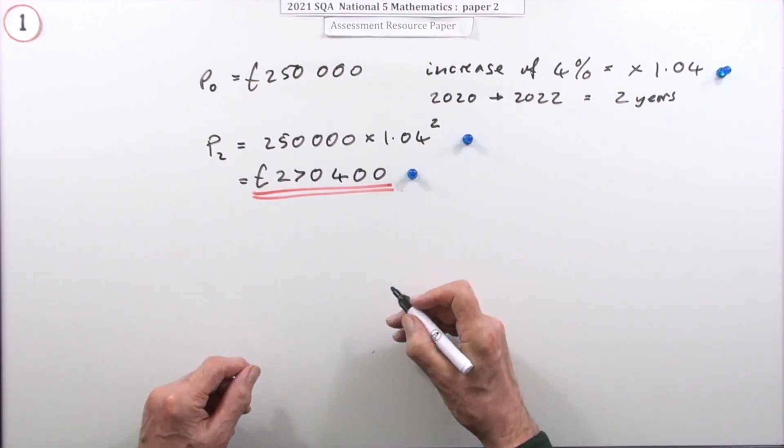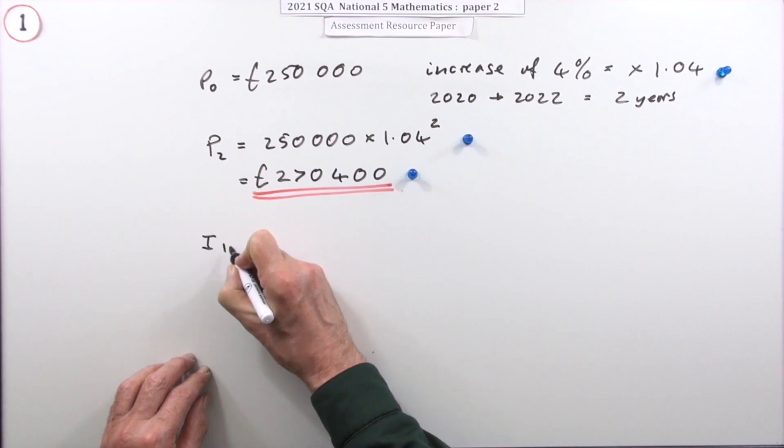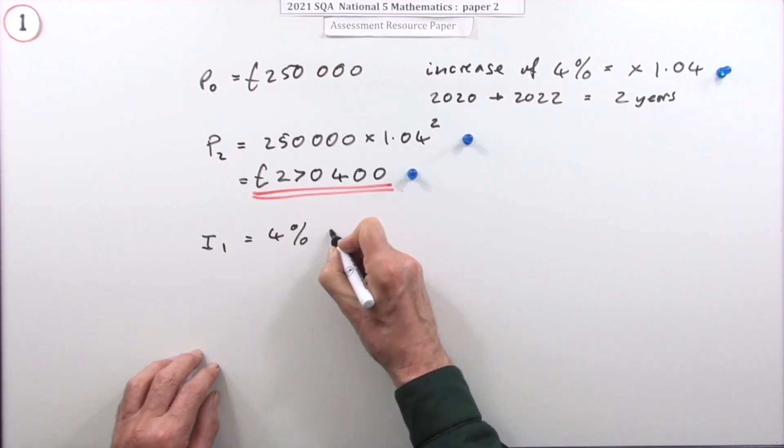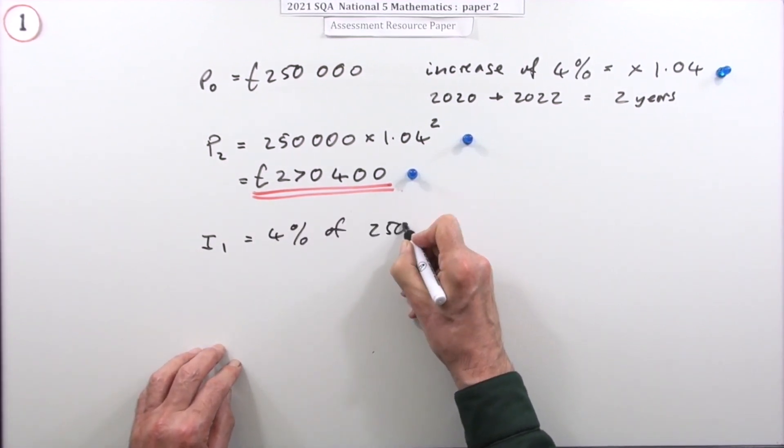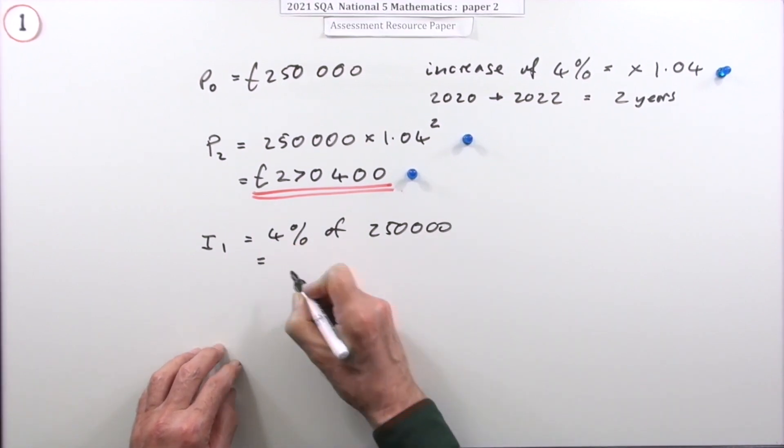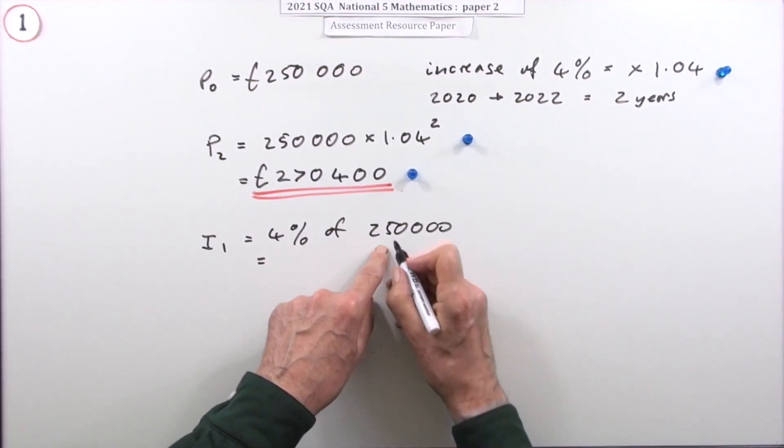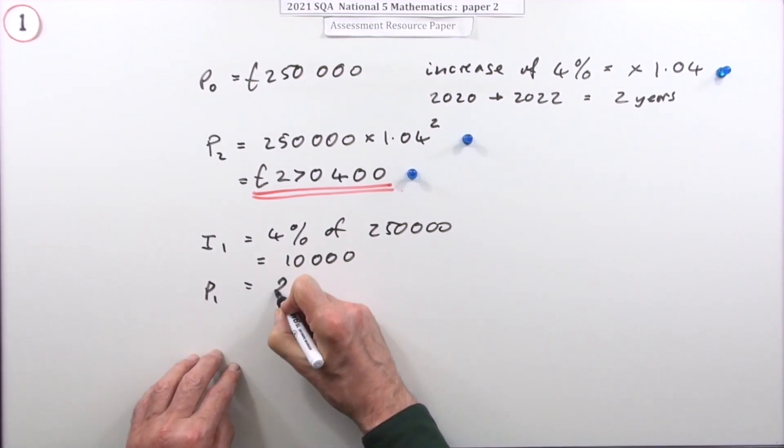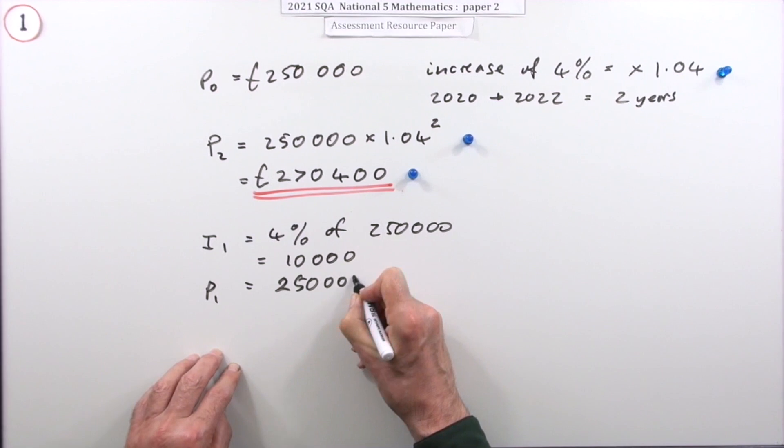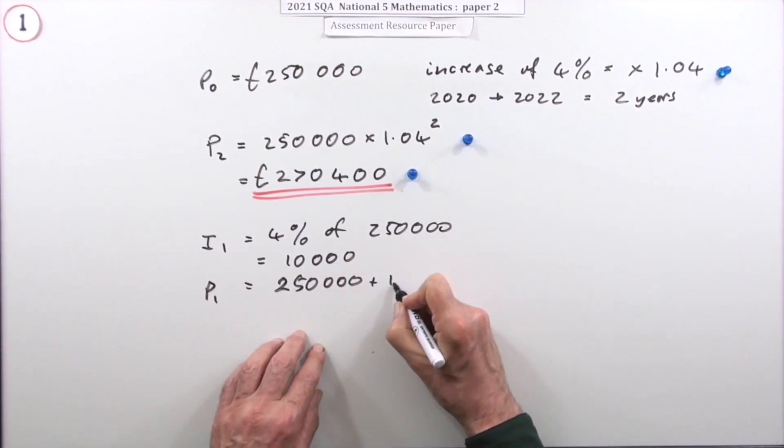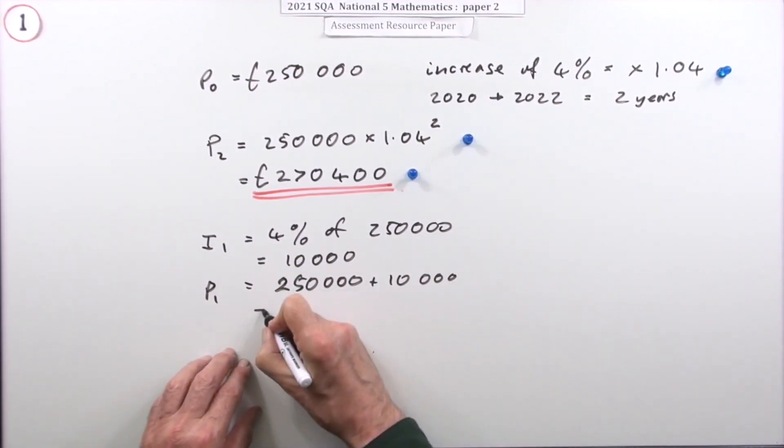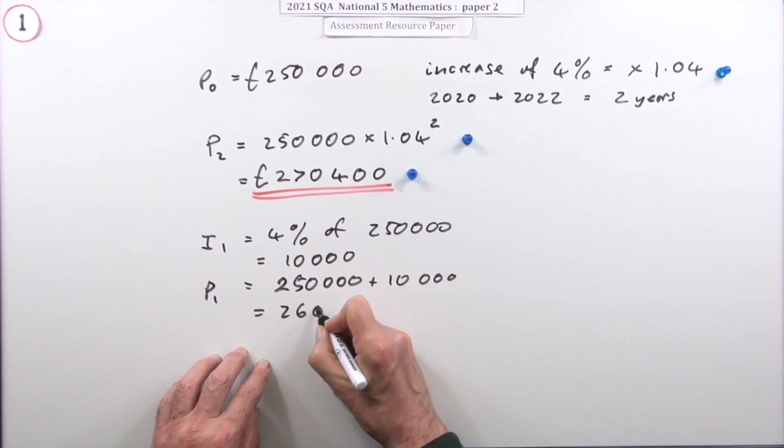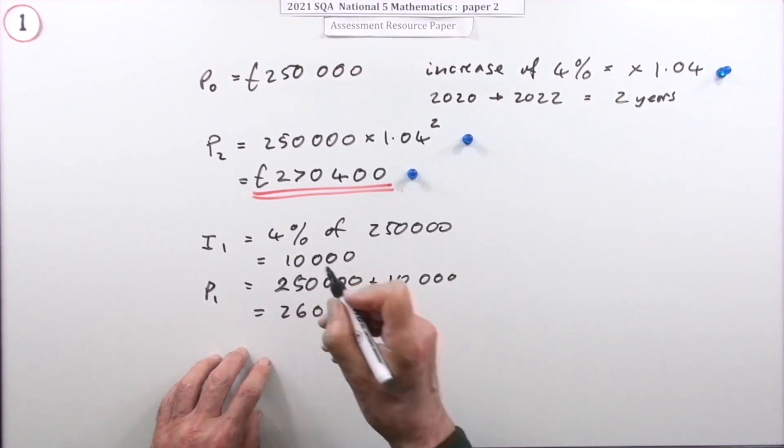Four percent is a 25th. We don't even need to use a calculator to do it the long way because you could just say the increase the first year is going to be 4% of £250,000. Well that's a 25th of it, so it's just going to be £10,000, which means its value after one year will be, just setting it all out, that's why it takes so long really doing it this way, plus the £10,000 is going to be £260,000. So that's the first step done.